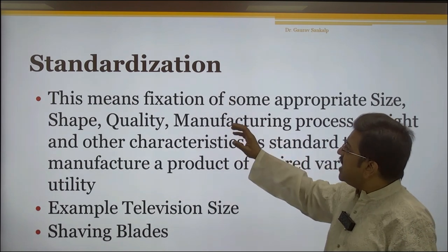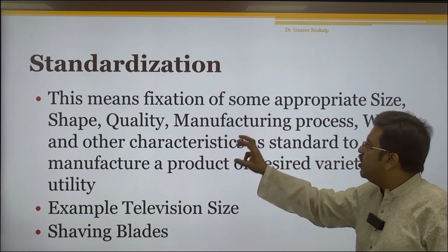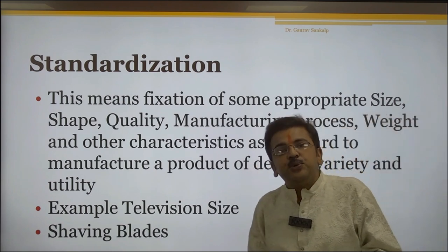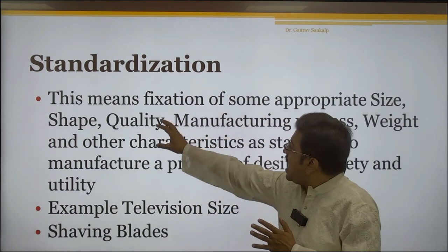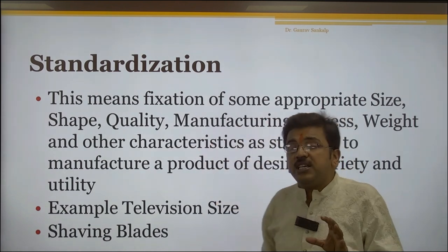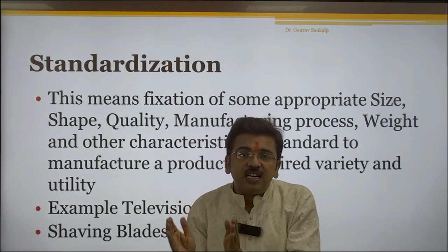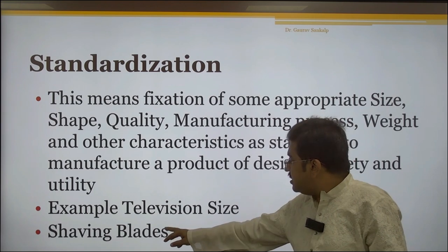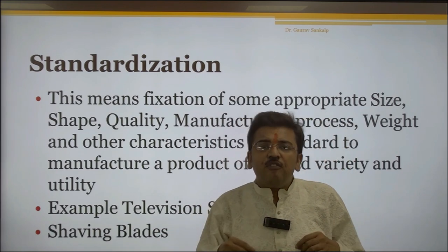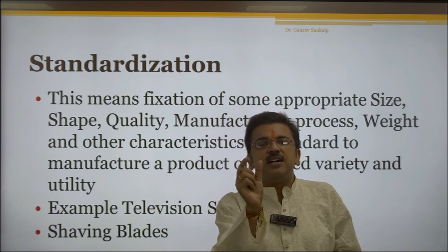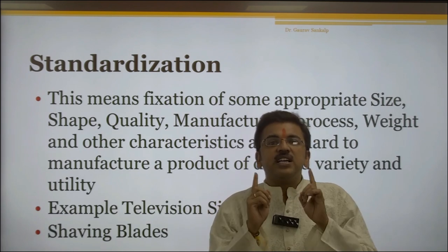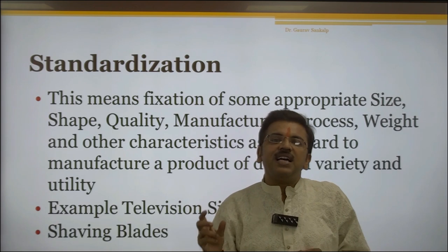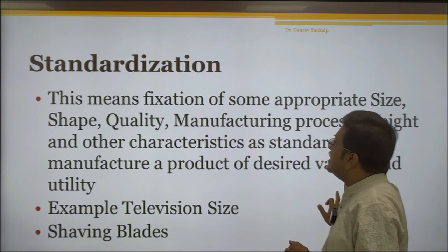Standardization means the fixation of appropriate size, shape, quality, manufacturing process, weight, and other characteristics as standard to manufacture a product of desired variety and utility. There must be a specific size, shape, manufacturing process, and weight — a certain standard process on which the company has to manufacture its product. For example, you take the blade of any company — it has a specific size, weight, and standard because it must fit in a specific machine. Similarly, mosquito repellent has a standard size. Everything must have a specific standard size, and companies have to follow certain standard processes.